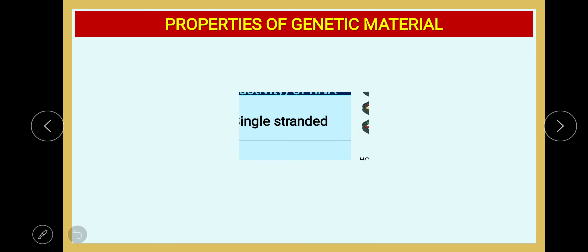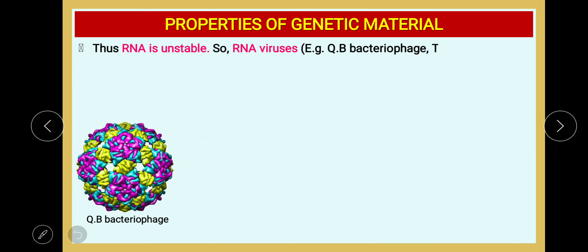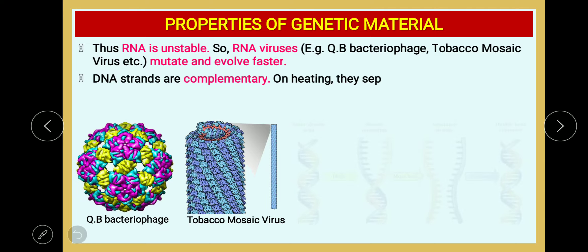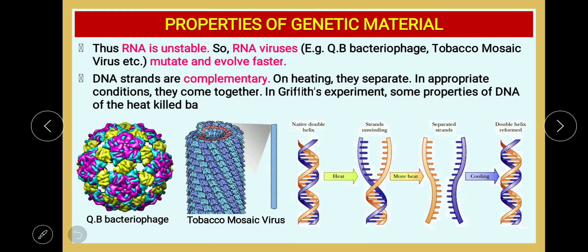RNA is unstable — RNA viruses, for example tobacco mosaic virus, mutate and evolve at a faster rate. RNA is highly mutable, which causes viruses to mutate rapidly. DNA strands are complementary: on heating they separate, and in appropriate conditions they come back together. In the Griffith experiment, the DNA of heat-killed bacteria did not lose its properties, indicating DNA is stable.